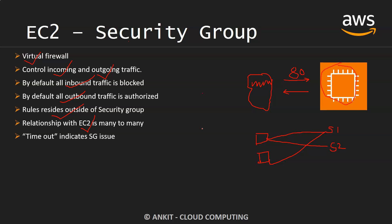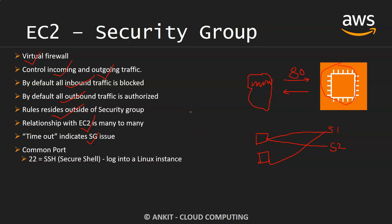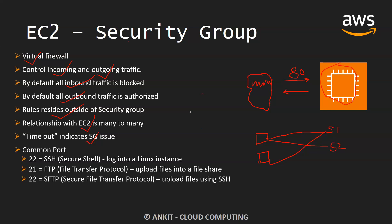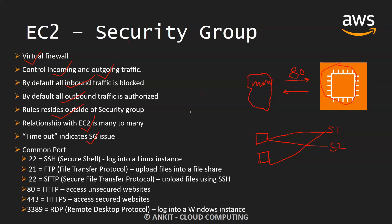A timeout issue indicates a security group issue. When you try to connect with EC2 and get a timeout, first diagnose whether the security group allows that route or not. Some common ports: 22 for Secure Shell to log into Linux, 21 for FTP, 22 for SFTP, 80 for HTTP, 443 for HTTPS, and 3389 for Remote Desktop Protocol to log into a Windows instance.